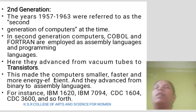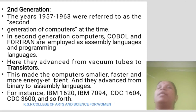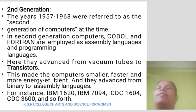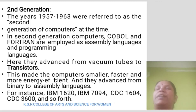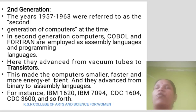Second Generation. The years 1957 to 1963 were referred to as the second generation of computers. At that time, COBOL and FORTRAN were employed as assembly language and programming languages. They advanced from vacuum tubes to transistors, which made the computers smaller, faster, and more energy efficient. They also advanced from binary to assembly language. For instance, IBM 1620, IBM 7094, CDC 1604, CDC 3600, and so forth.